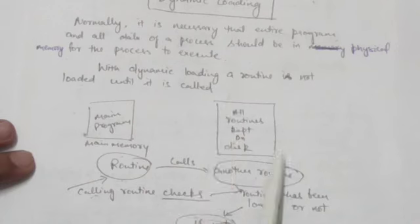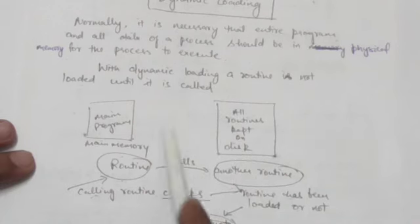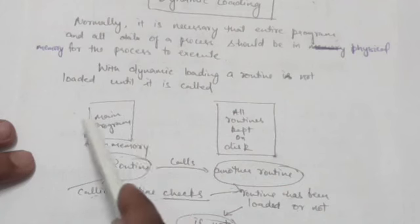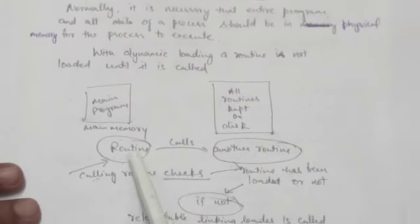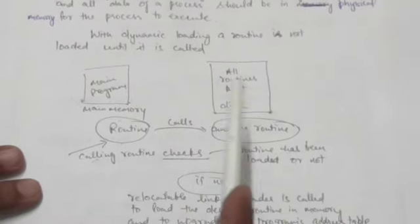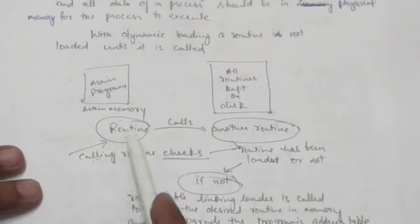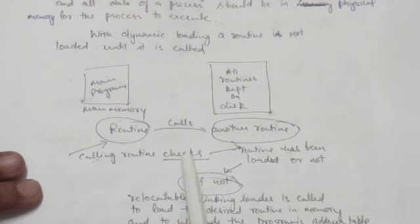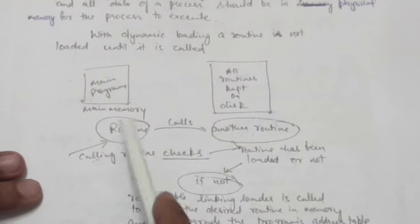In this case, all routines are kept on disk and the main program is loaded in main memory and executed. Whenever a routine calls another routine, the calling routine first checks whether the routine it has called has been loaded or not.